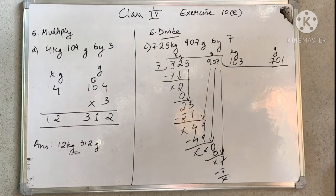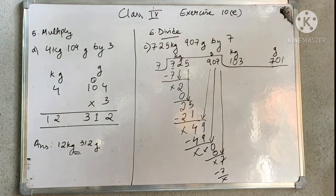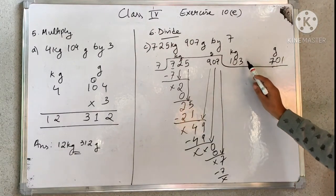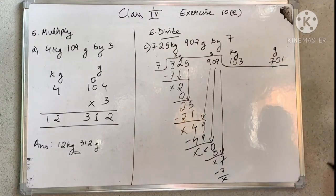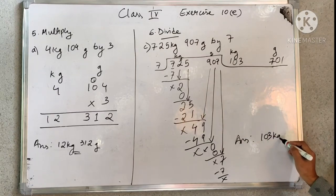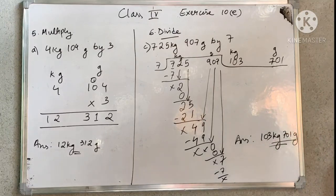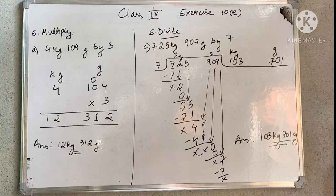This is just like any other normal division — please do not get confused. Just separate the things that are given: kg, gram, decigram, centigram. In your answer part, mention them in the same manner. So your answer is 103 kg in the kilogram part and 701 grams in the gram part. Even for litres and millilitres the process is the same.